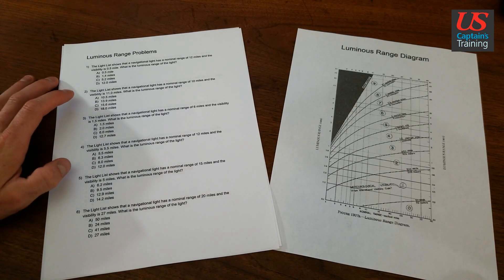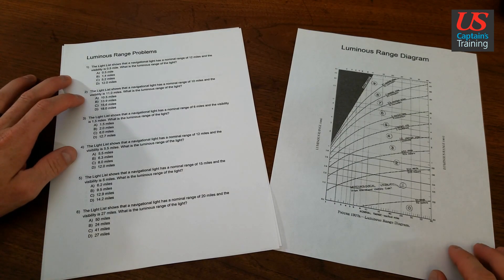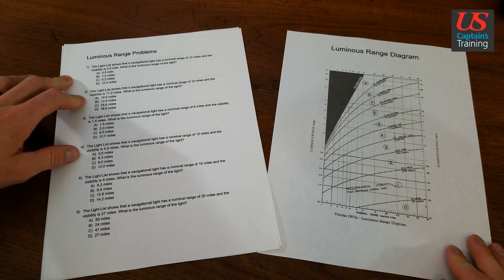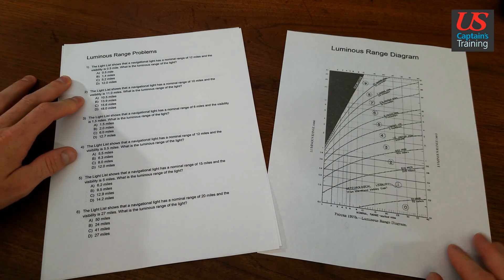Luminous Range practice problem 2. The light list shows that a navigational light has a nominal range of 10 miles and the visibility is 11 miles. What's the luminous range?